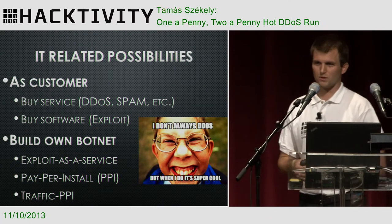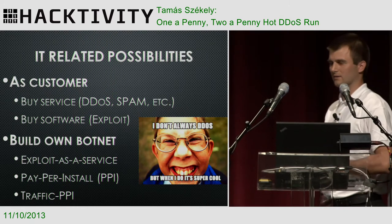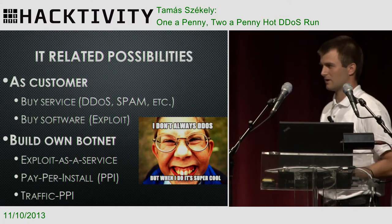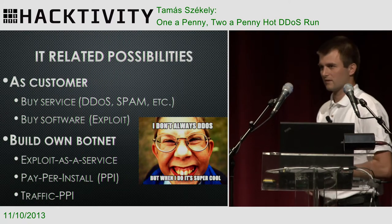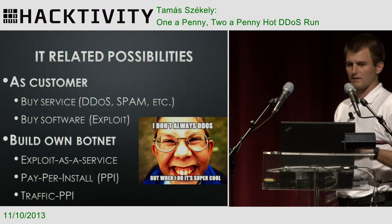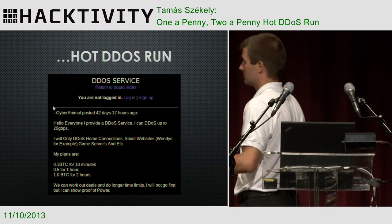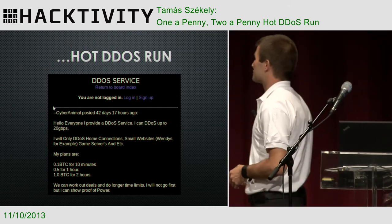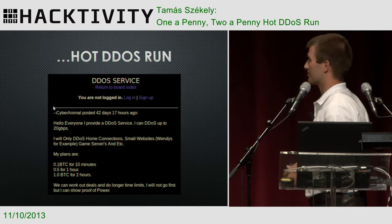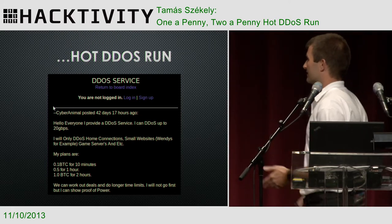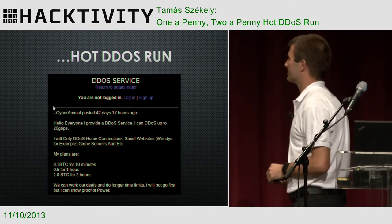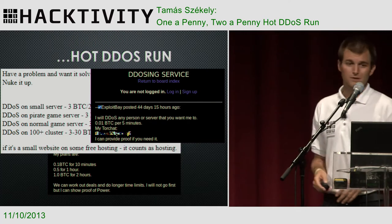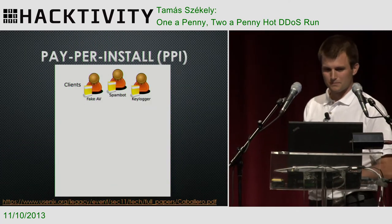What are the IT-related possibilities? As a customer, you can buy a lot of things — exploits, DDoS service, spam, whatever you wish. We can also build our own botnet. There are multiple business models. A couple of advertisements: I was looking for DDoS ads and here you see 20 gigabit per second bandwidth offered. I don't know of too many servers that are able to withstand 2 gigabits per second. It's not even expensive — two hours is enough to make that server crumble. You'll find a lot of such advertisements.